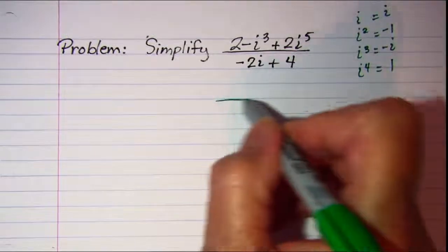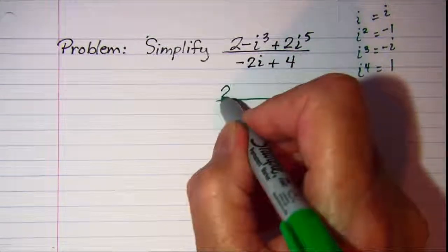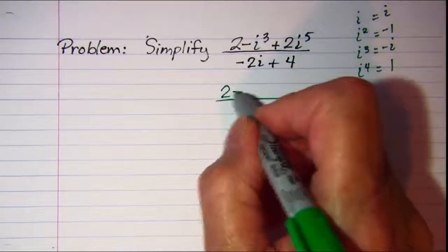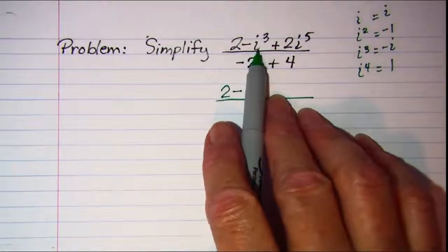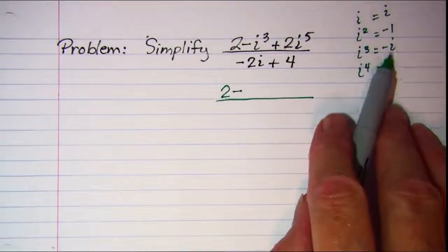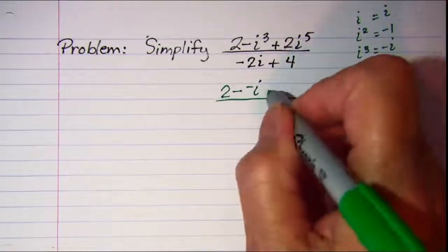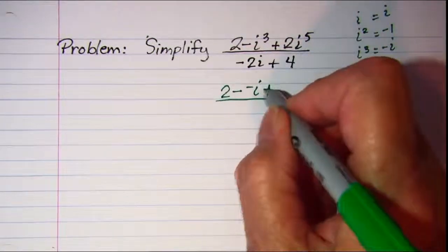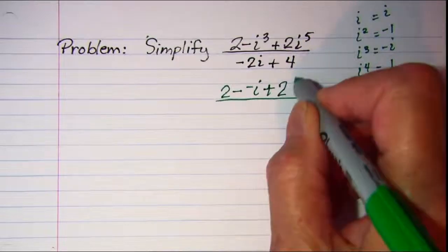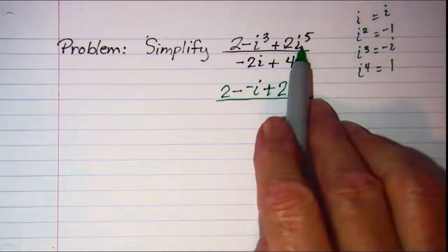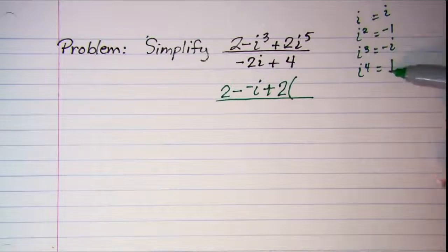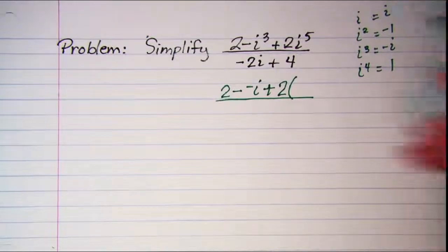So in my numerator I have to subtract and then in place of i cubed I'm going to write negative i. And then plus 2 times, and then i to the 5th power we have to come back up and just write i.